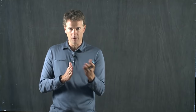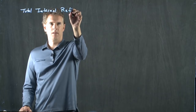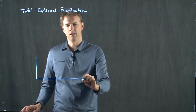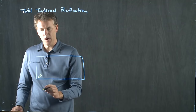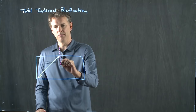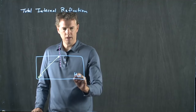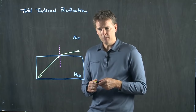Let's talk about going from higher index to lower index, and something called total internal reflection. In our pool, when we had an interface, let's take a flashlight underwater and shine it towards the surface. We know that light ray is going to bend away from the normal. If this is water and air out here, the light bends away from the normal like that.